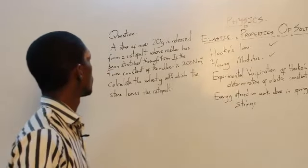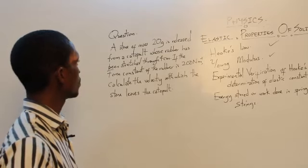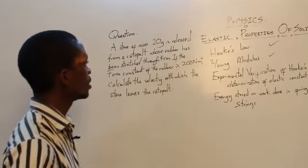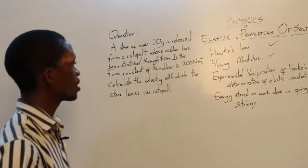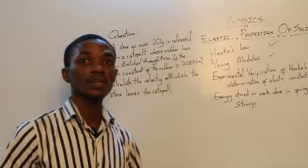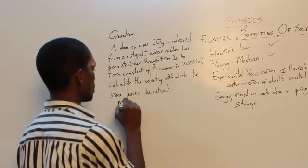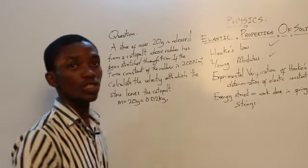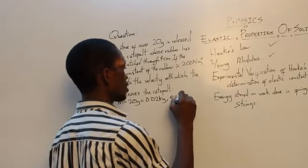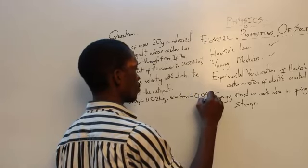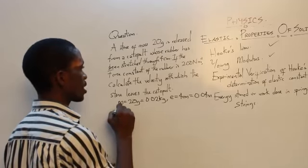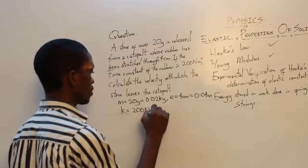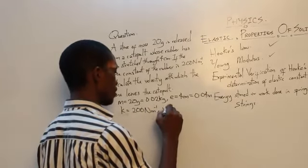Let's take a question on springs. A stone of mass 20 grams is released from a catapult whose rubber has been stretched through 4 centimetres. If the force constant of the rubber is 200 newtons per metre, calculate the velocity with which the stone leaves the catapult. Writing out our parameters: mass M is 20 grams, which is 0.02 kilograms; extension E is 4 centimetres, which is 0.04 metres; and the force constant K is 200 newtons per metre. We are asked to find velocity.